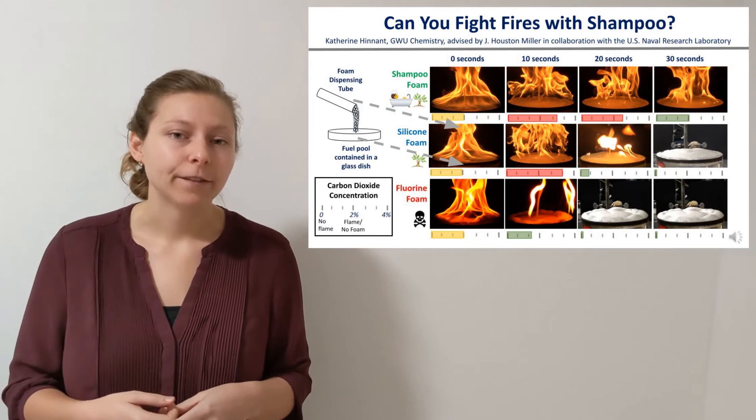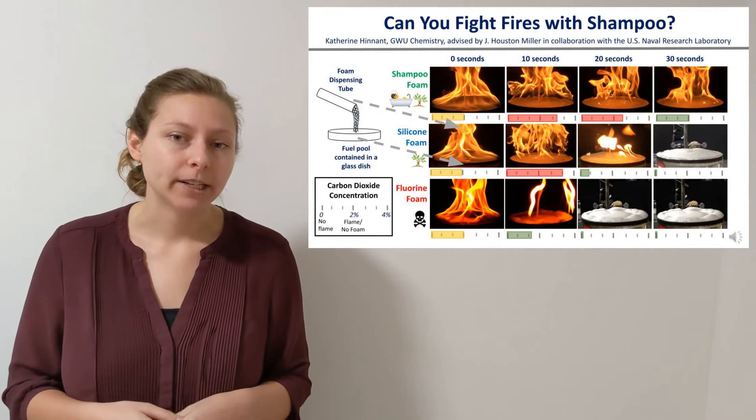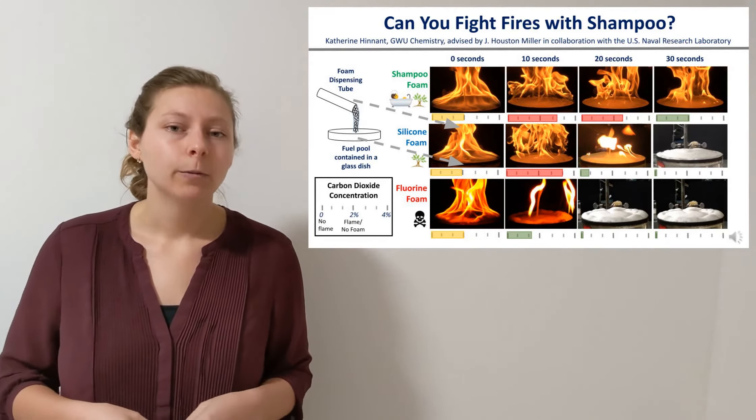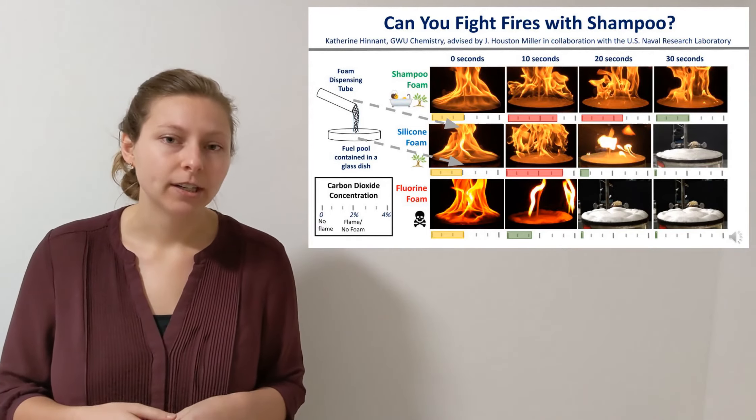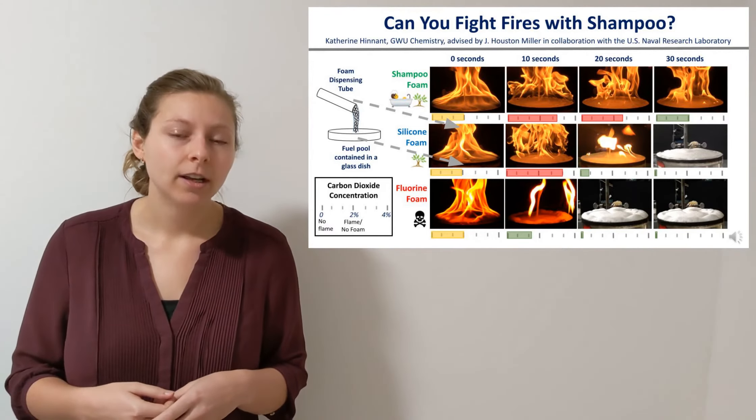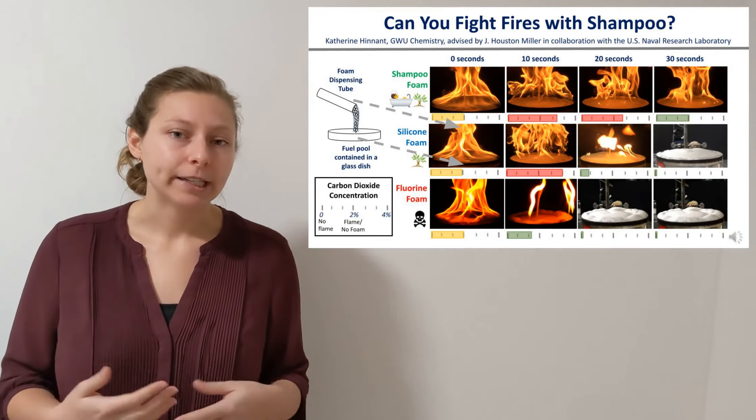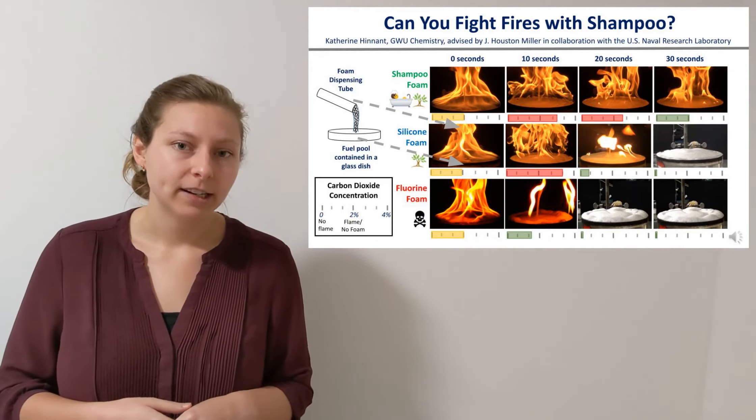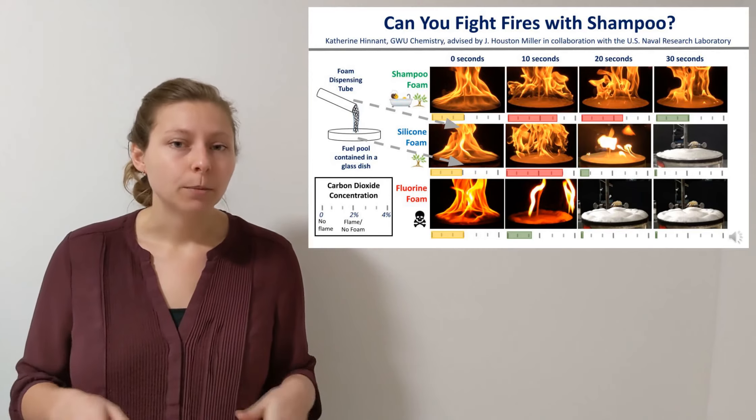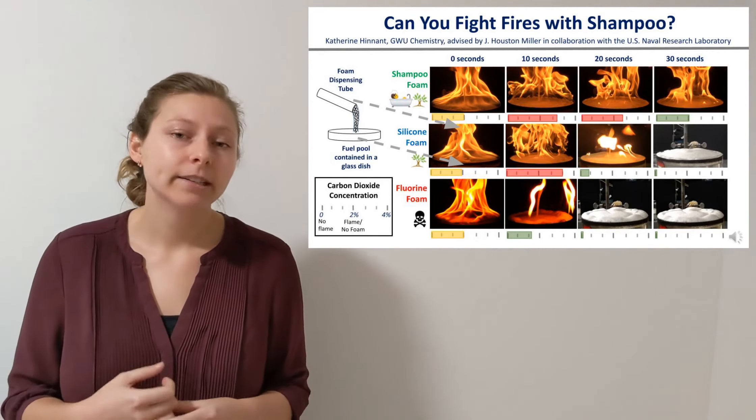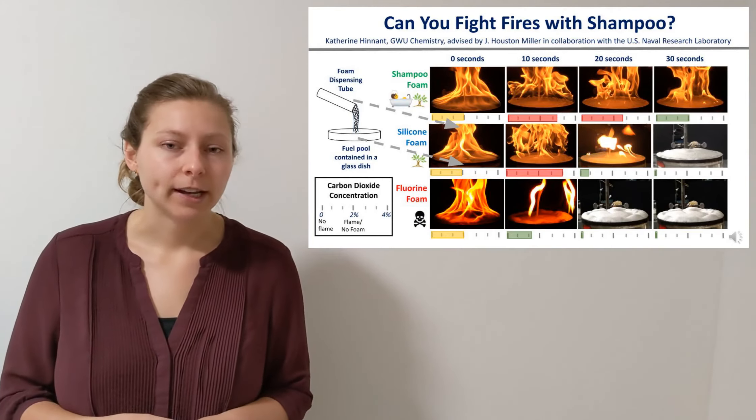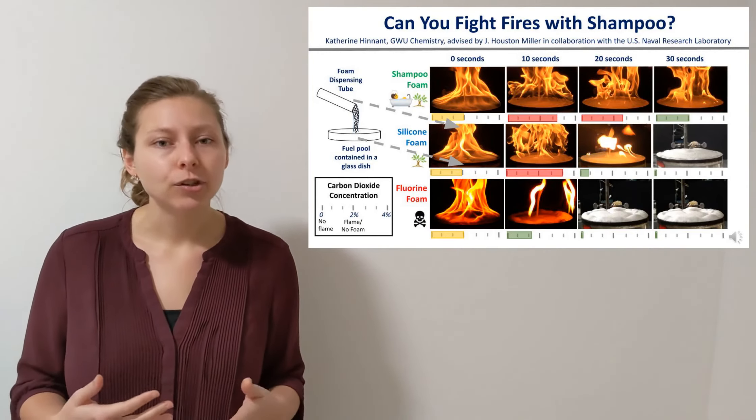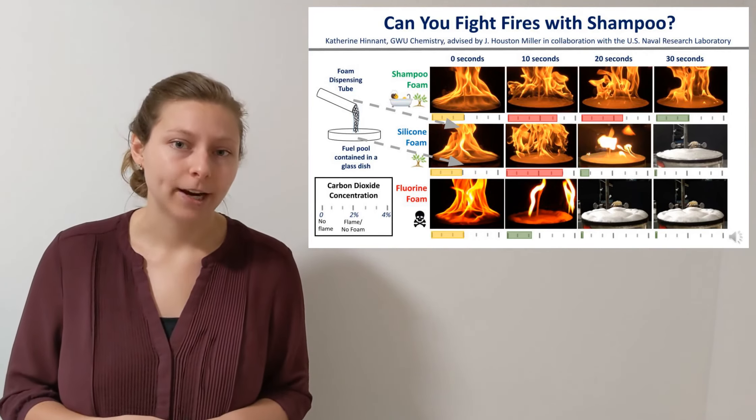To determine the firefighting potential of new environmentally friendly surfactants, we developed an experiment measuring the carbon dioxide concentration during fire extinction. Burning fuel generates carbon dioxide. As the flame goes out, the production of carbon dioxide decreases. By measuring changes in carbon dioxide concentration, we can measure the effectiveness of a foam suppressing a fire.